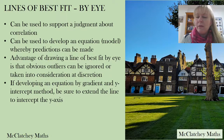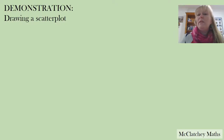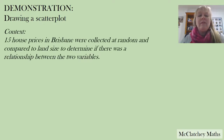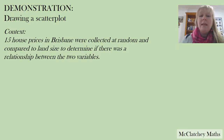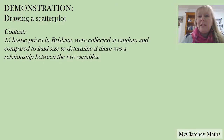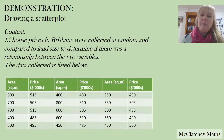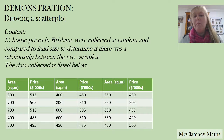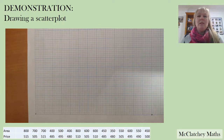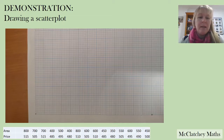Today we're focused on drawing the scatterplot. Let's do a demonstration with an example. I've got 15 house prices in Brisbane collected at random, comparing them to land size — typically you'd expect that the bigger the block size, the more expensive the price will be. For example, one block is 800 square meters and sold for $515,000. Before I start on graph paper I want to do a little bit of planning.